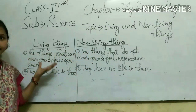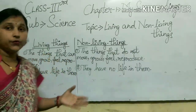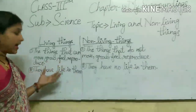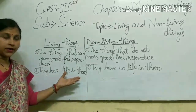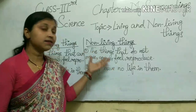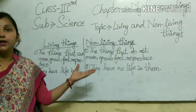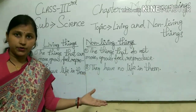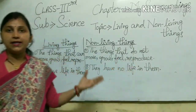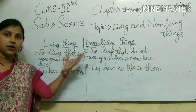So what are living things? Living things are the things that can move, grow, feel, or reproduce, because they have life in them. But non-living things are the things that cannot move, grow, feel, or reproduce, because they have no life in them. So let's read more about living things and non-living things.